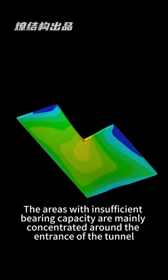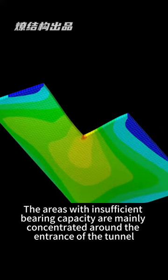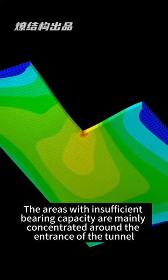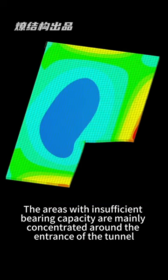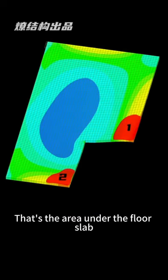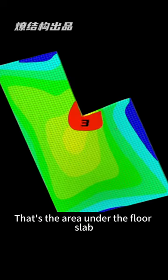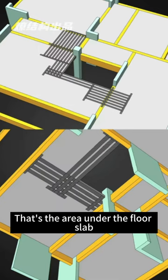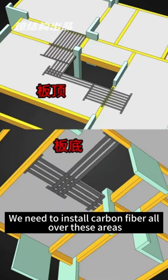The areas with insufficient bearing capacity are mainly concentrated around the entrance of the tunnel. That's the area under the full slab. We need to install carbon fiber all over these areas.